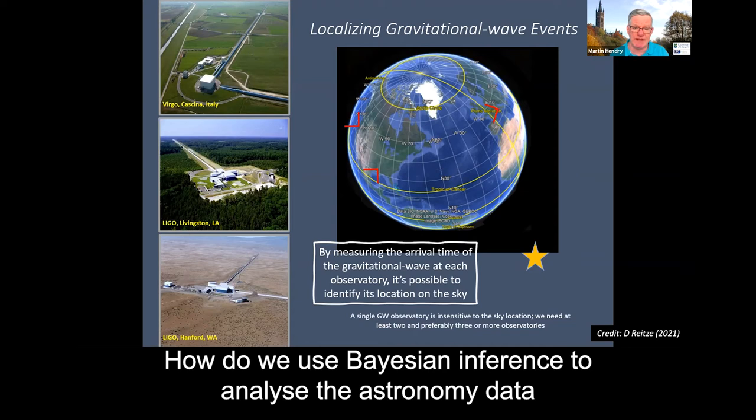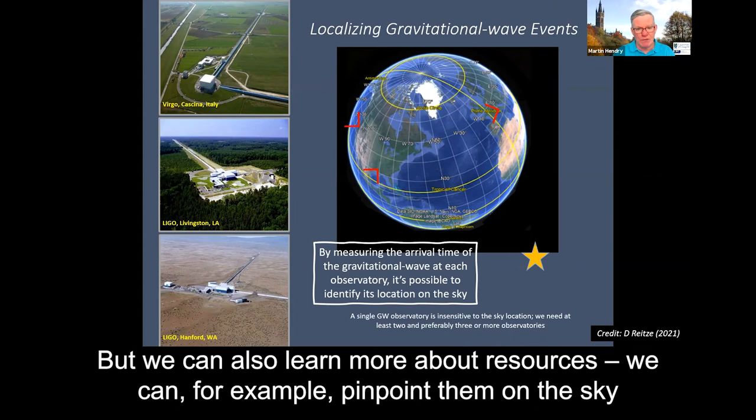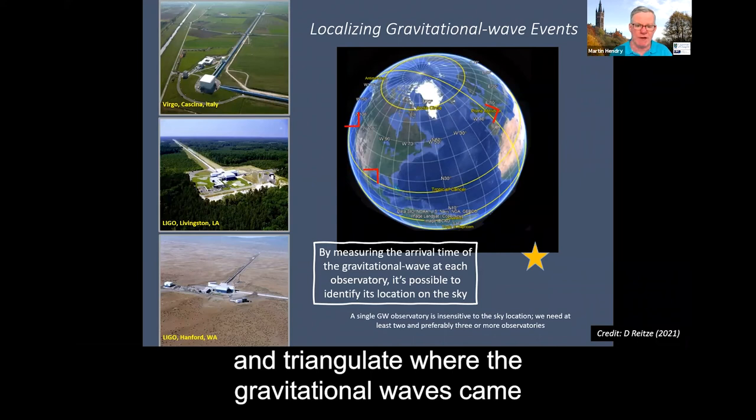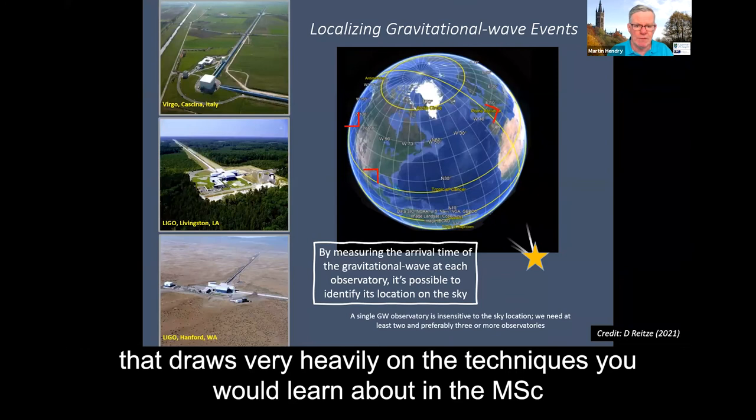And well, how do we use Bayesian inference to analyse the astronomy data that we get from LIGO and indeed our partner, Virgo? Well, we saw before the posterior distributions, as we call them, on the masses of the black holes, but we can also learn more about the sources. We can, for example, pinpoint them on the sky. We can combine the data across the different detectors and triangulate where the gravitational waves came from. So that's another element of our analysis method that draws very heavily on the techniques you would learn about in the MSC.